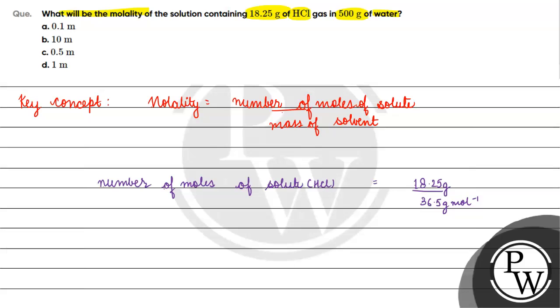Look, 35.5 is chlorine's atomic mass plus 1, so it becomes 36.5. This will give us 0.5 moles.